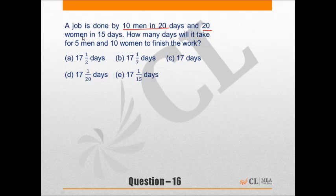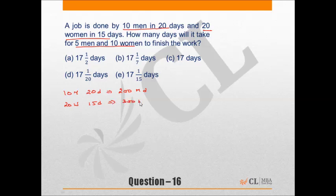Question 16: A job is done by 10 men in 20 days and by 20 women in 15 days. How many days will it take for 5 men and 10 women to finish the work? 10 men in 20 days gives 200 man-days of work. 20 women in 15 days gives 300 woman-days. Since both complete the same job, 200 man-days = 300 woman-days, so 2 men ≡ 3 women, meaning 1 man ≡ 1.5 women.